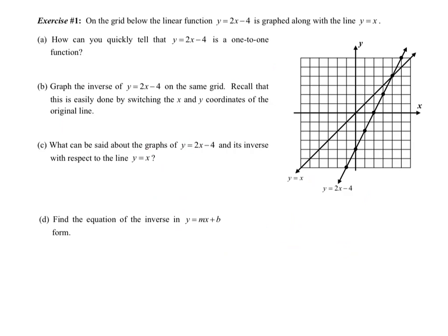Exercise 1: On the grid below, the linear function y equals 2x minus 4 is graphed along with the line y equals x. Part A, how quickly can you tell that y equals 2x minus 4 is a one to one function? Well, one to one's got to be the key there. When you see one to one, it needs to pass the horizontal line test and the vertical line test. So let's quickly take a look.